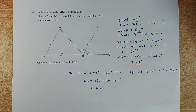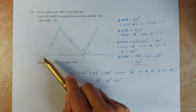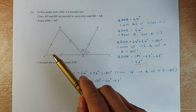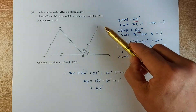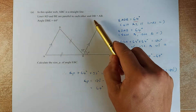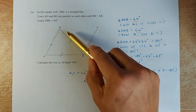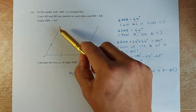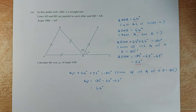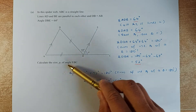Question 3a: in the spiderweb, ABC is a straight line. Line AD and BE are parallel. DB is equal to AB, meaning this triangle is an isosceles triangle. Angle DBE is 64 degrees, and you are asked to calculate angle P.